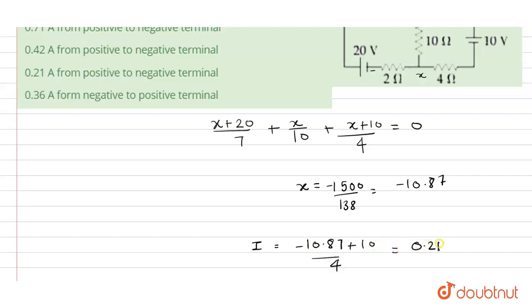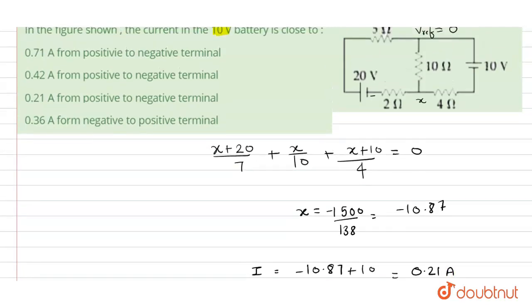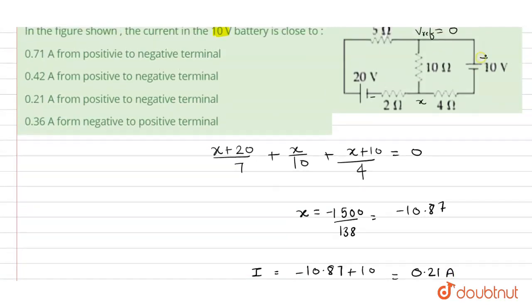The value of current is 0.21 ampere and current will flow from positive to negative terminal. So current direction will be like this. Hence option C is right. Thank you.